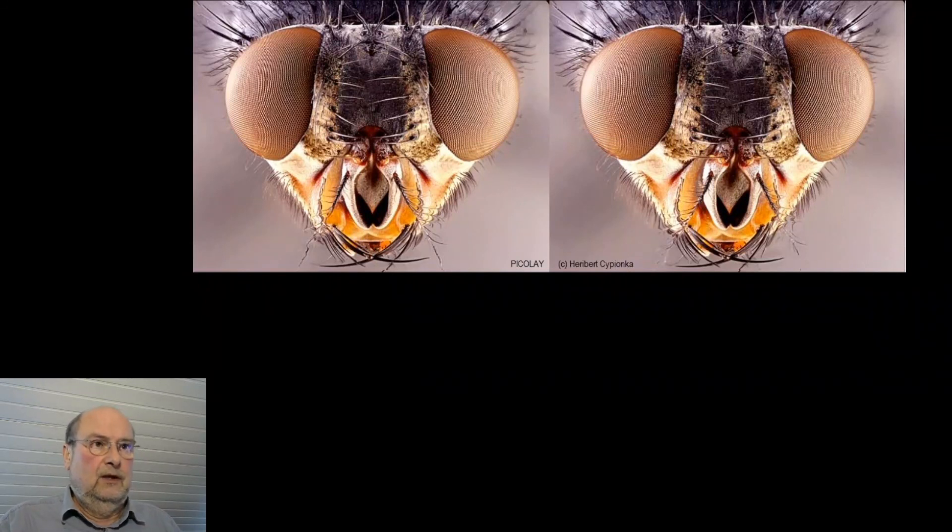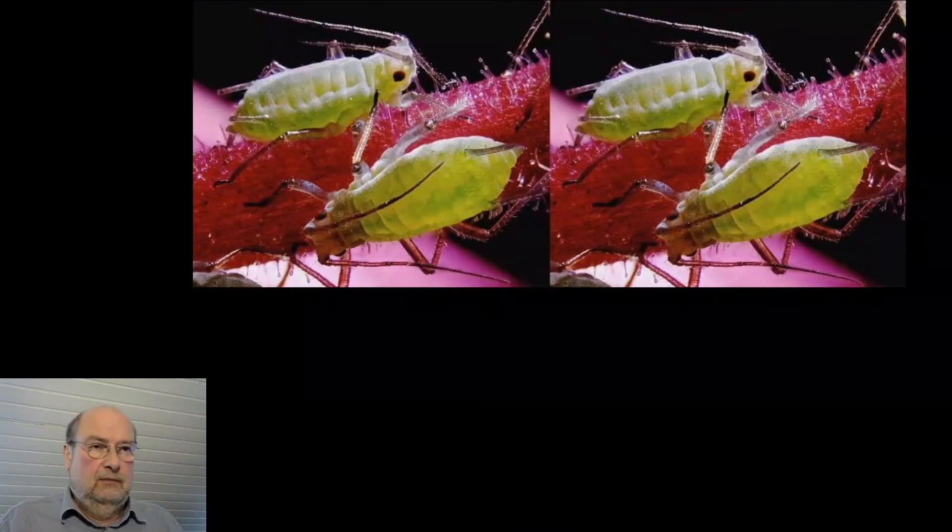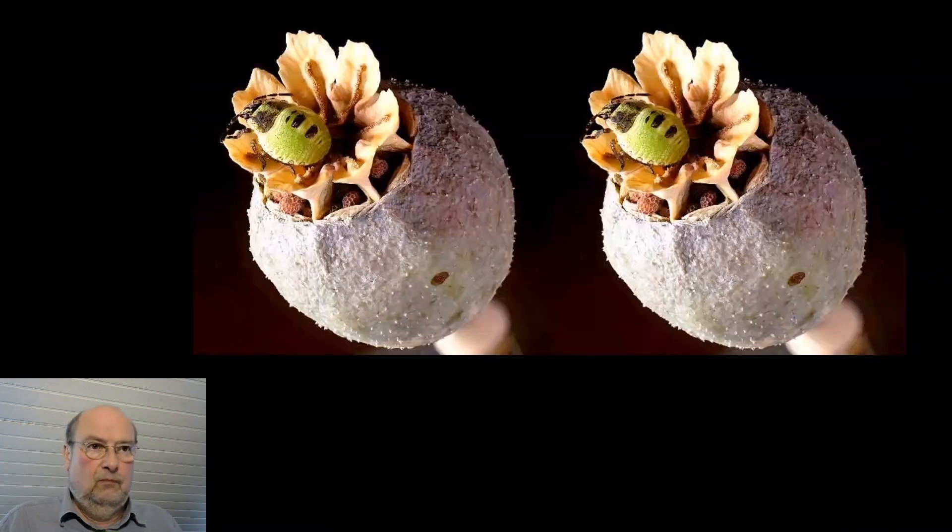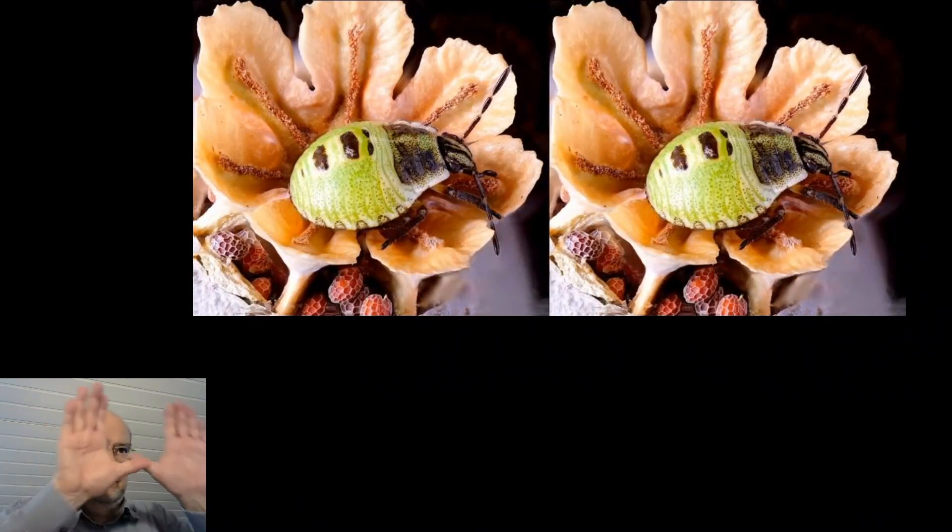And a house fly. It works. And some green louses. The poppy capsule with the bug, the baby bug. You had this. Now a close up on the same scene. It works.